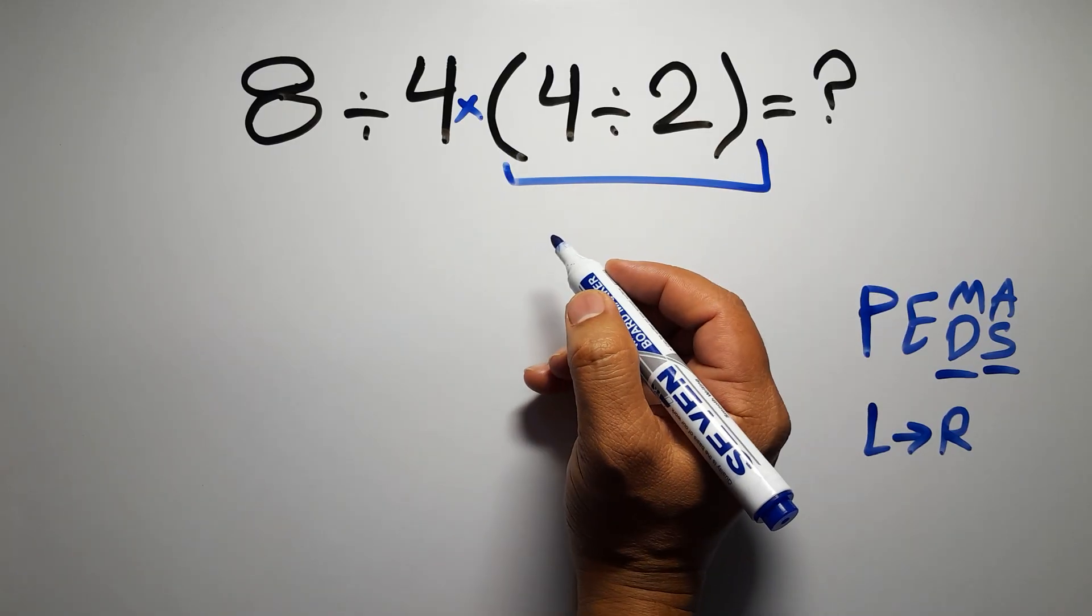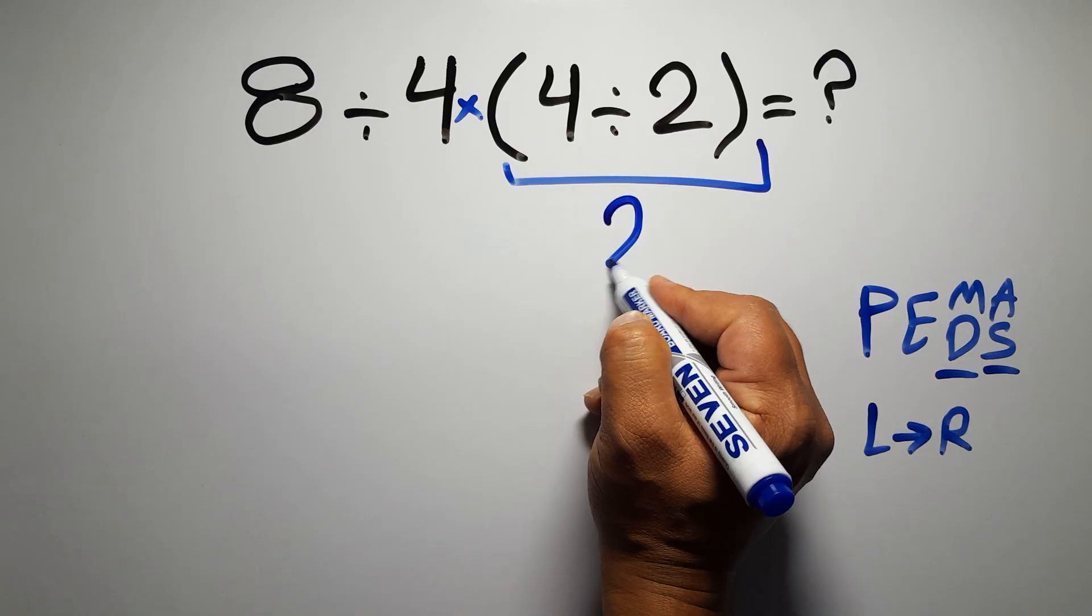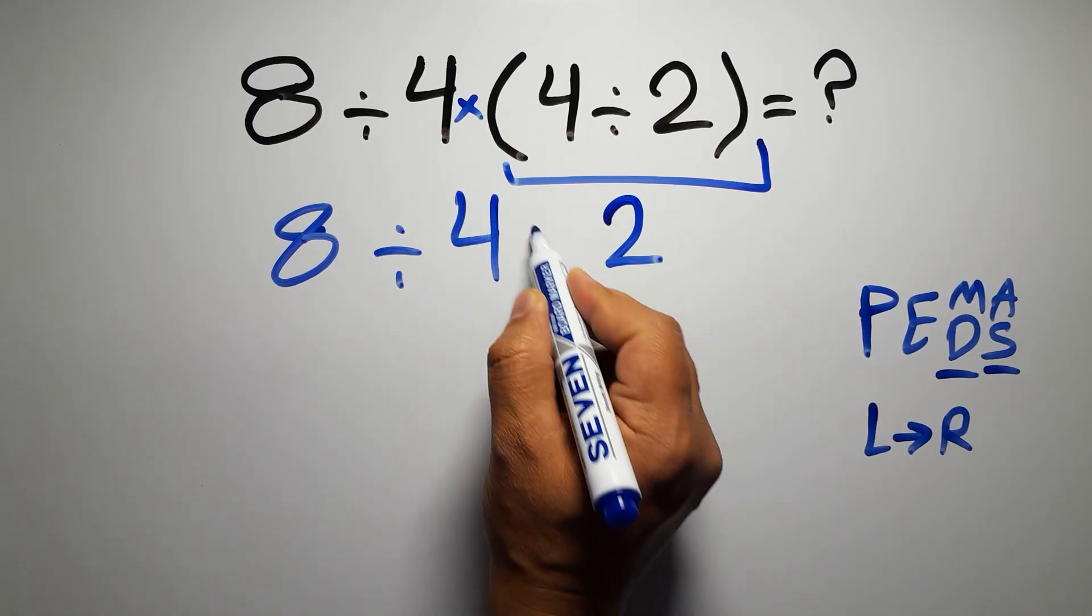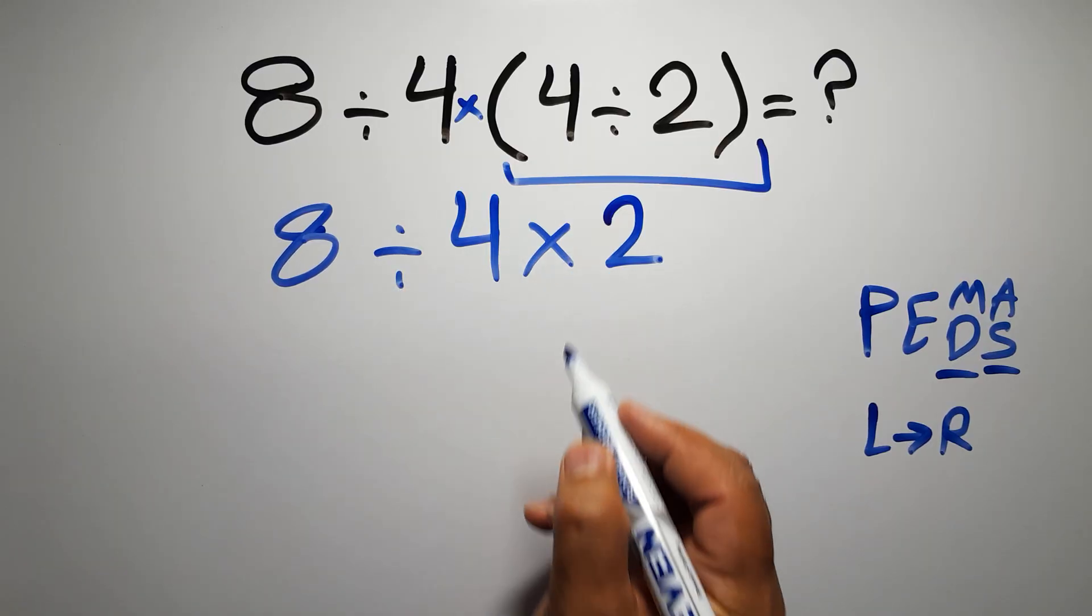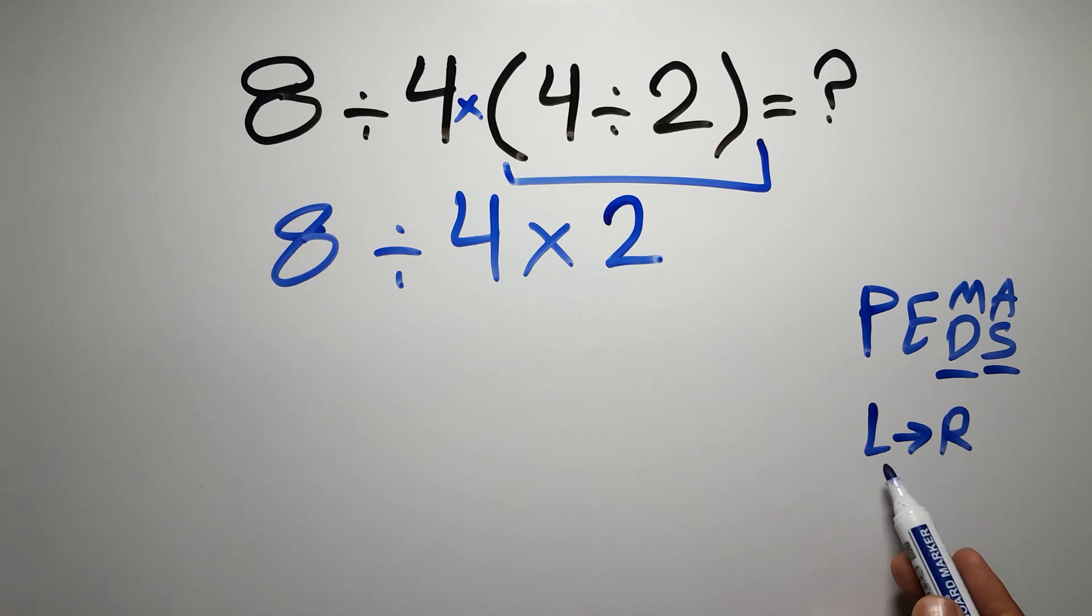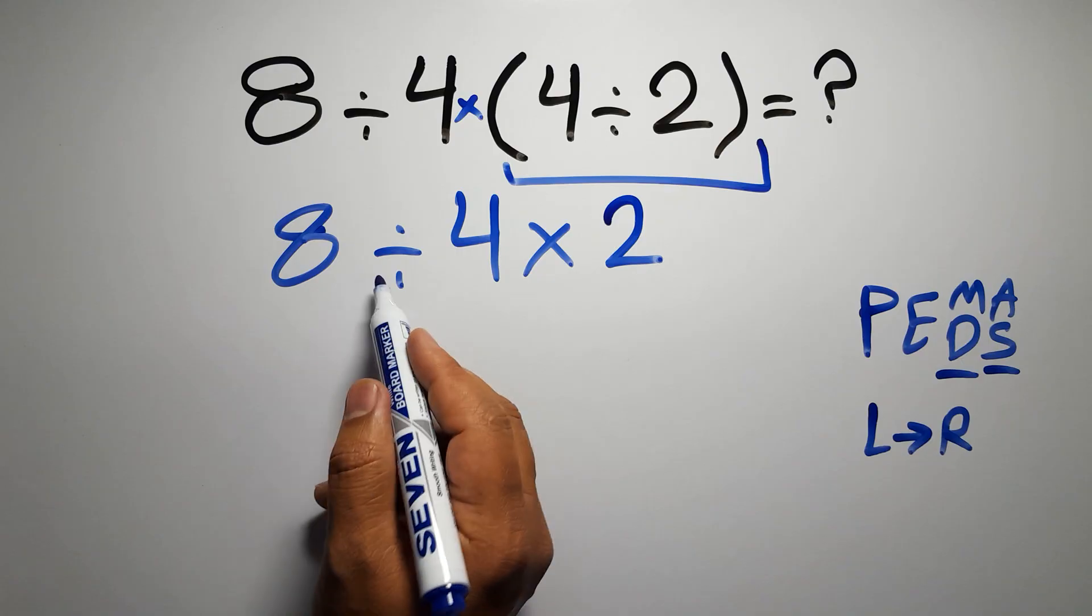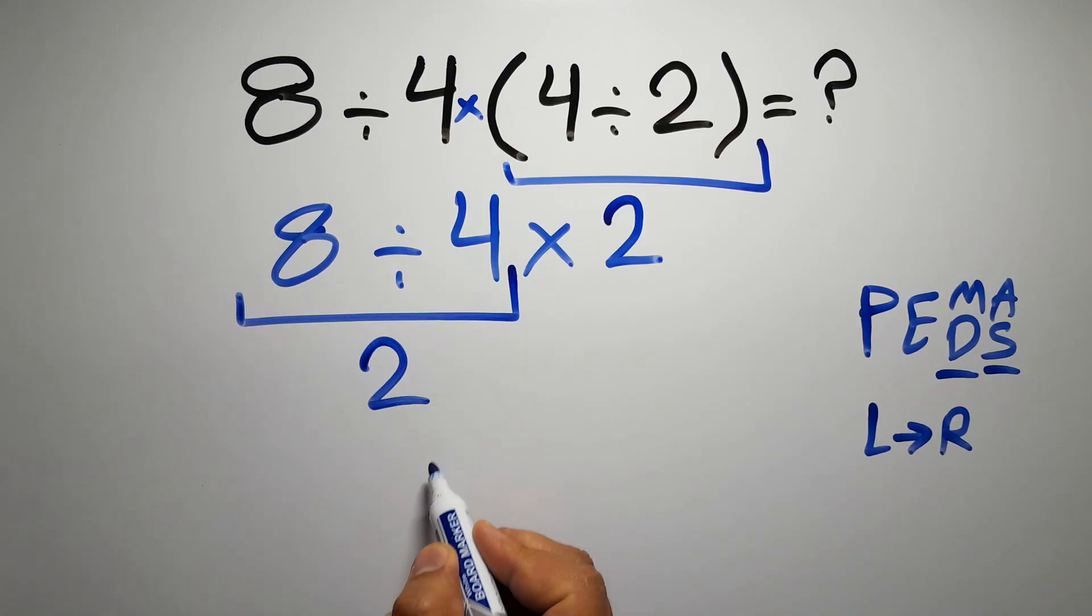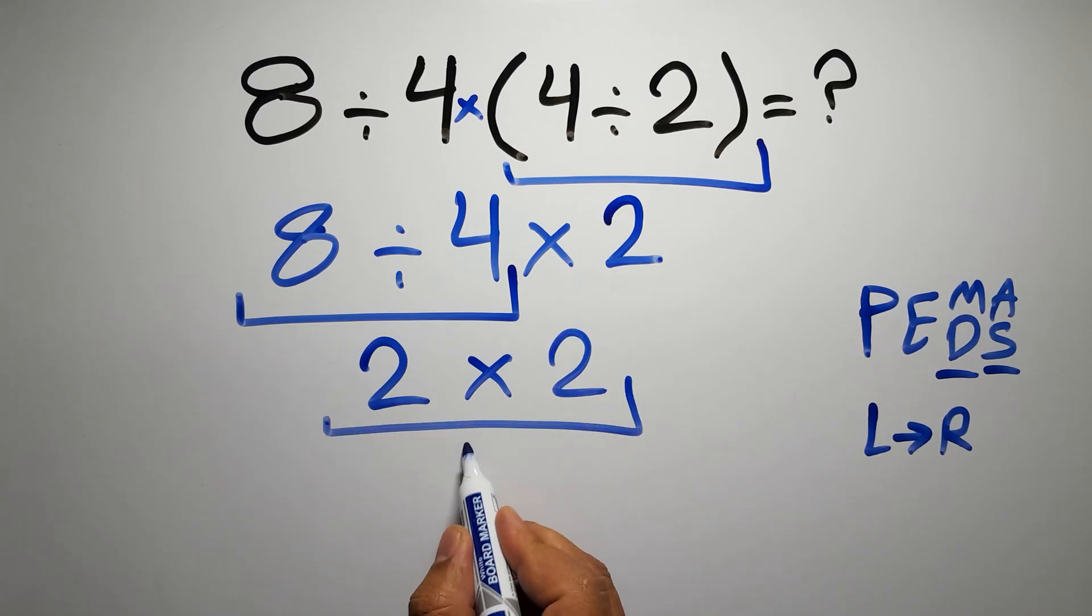So first these parentheses. Inside these parentheses, we have 4 divided by 2, which gives us 2. So 8 divided by 4, then times 2. Now we have one division and one multiplication. As I said, multiplication and division have equal priority, and we have to work from left to right. So here, first we have to do this division. 8 divided by 4 gives us 2, so 2 times 2, which equals 4.